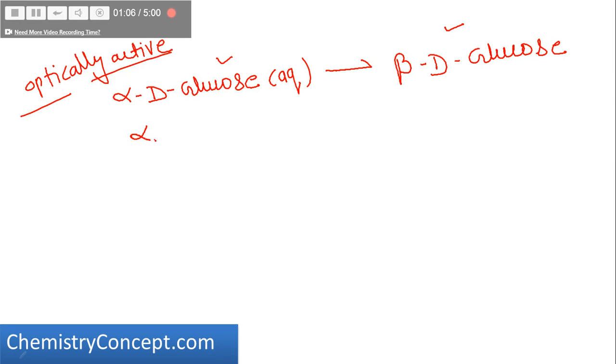And the degree of rotation for beta-D-glucose is, let's say, 100 degrees. These are assumed values, not accurate values. I'm just trying to explain.